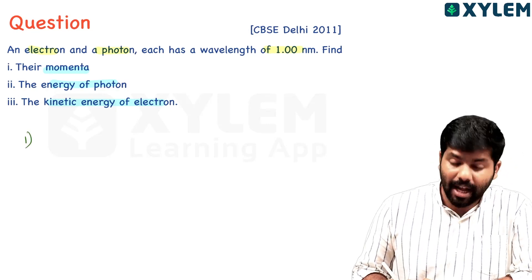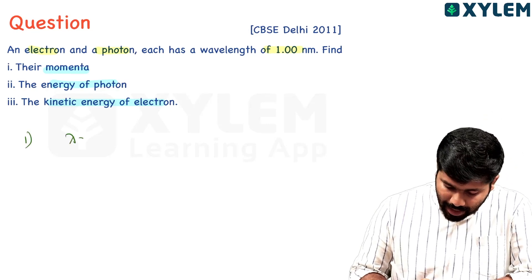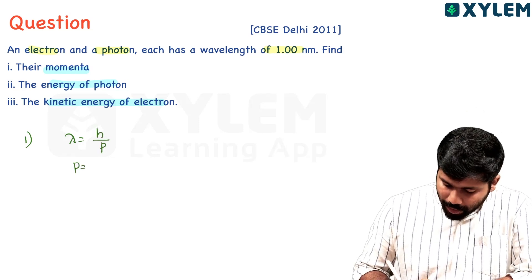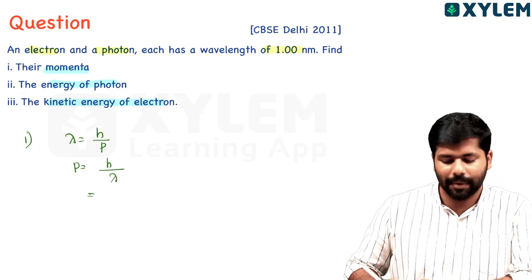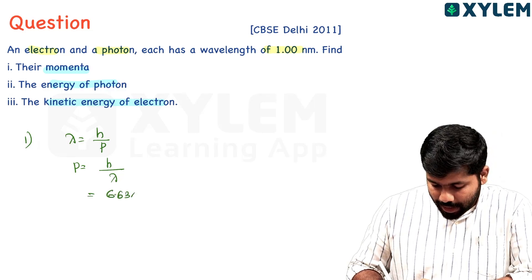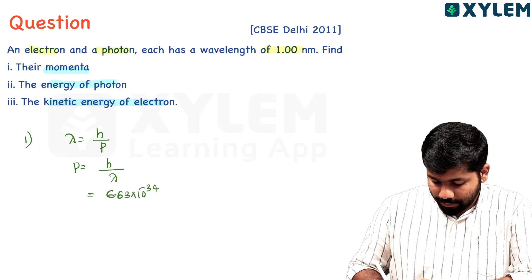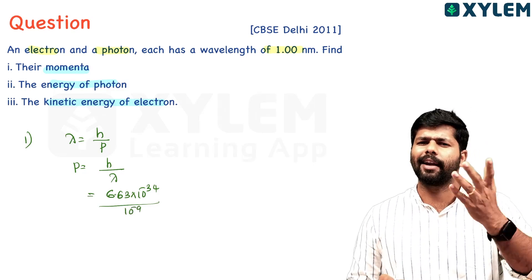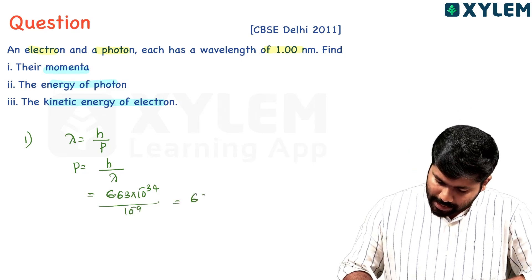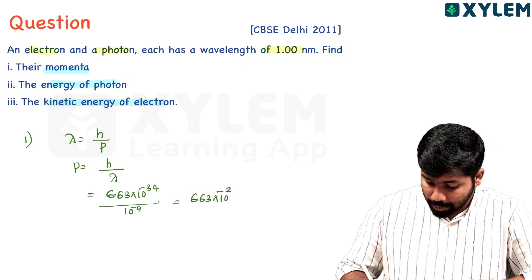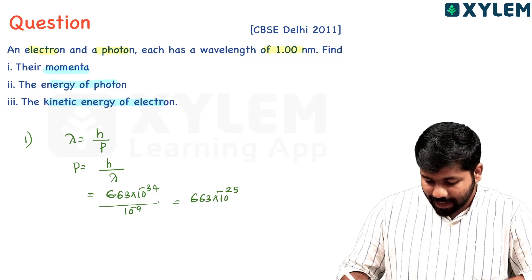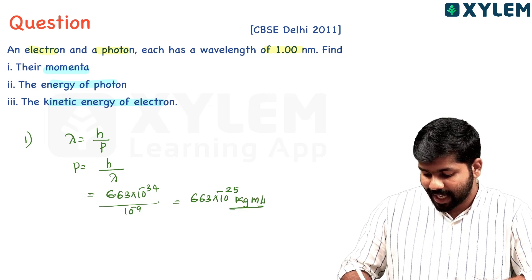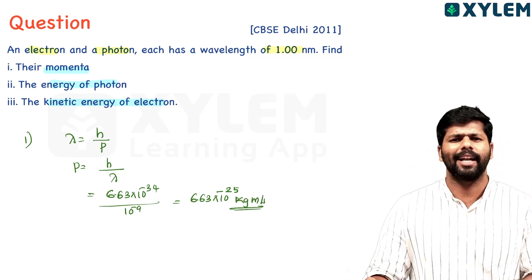This is the equation. We will use De Broglie's wavelength equation: lambda is equal to h by p. So p is equal to h by lambda. Substituting: 6.63 × 10⁻³⁴ divided by 10⁻⁹ (since 1 nanometer = 10⁻⁹ m). The answer is 6.63 × 10⁻²⁵ kilogram meter per second. That is the momenta.